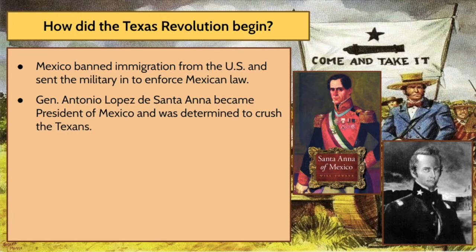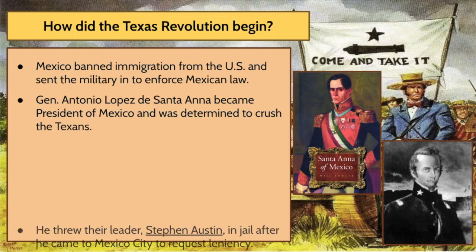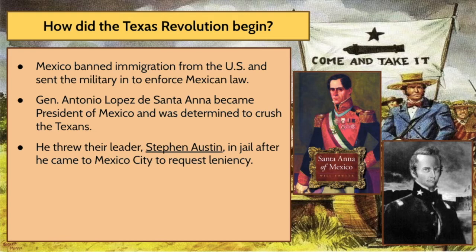General Antonio Lopez de Santa Ana became president of Mexico, and this man was a very colorful figure in Mexican history. He was once quoted as saying, 'If I woke up one day and found myself God, I would want to be more.' He was determined to crush the Texans and any potential rebellion in Texas. He threw their leader, Stephen Austin — Austin, Texas, the capital of Texas, is named after him — into jail after Austin went to Mexico City asking Santa Ana for leniency. Santa Ana wasn't having any of that, but Austin was eventually released.